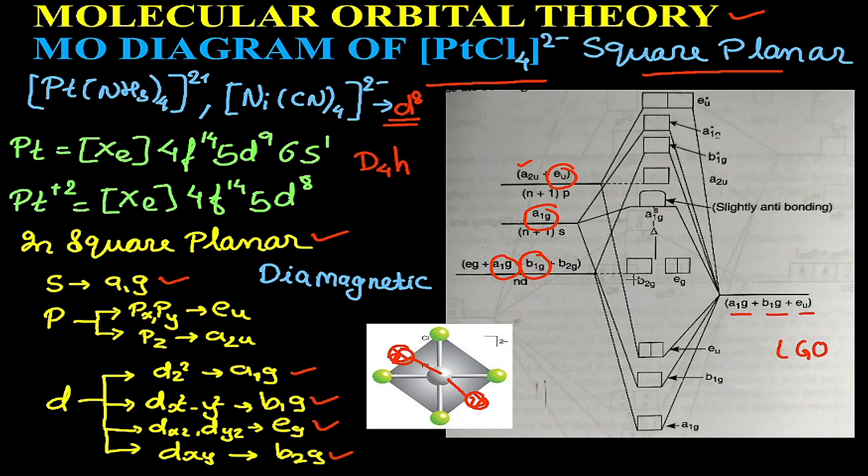This is the MO diagram: a1g of metal and a1g of ligand will combine to give a1g bonding, a1g slightly antibonding, and completely antibonding.